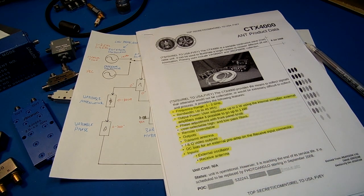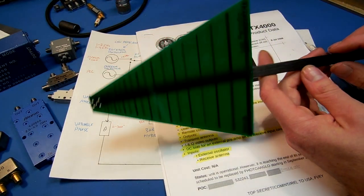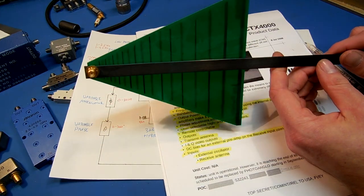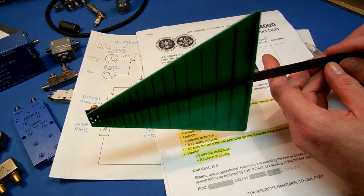The antennas on these devices are most likely log periodic types like this, wideband. The problem is, they need to be isolated. The transmit and receive need to be isolated.